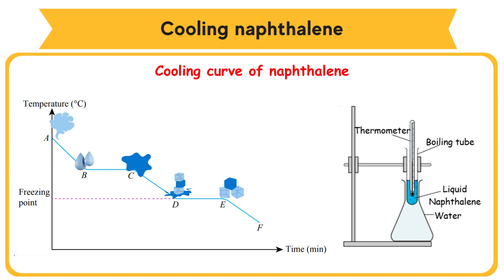At point E, all the liquid has frozen. From point E to point F, the particles in the solid naphthalene lose heat energy and vibrate more slowly. The temperature falls from point E to point F.